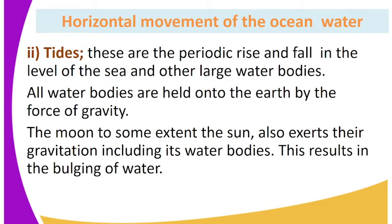On to the horizontal movement of ocean water. Number two are tides. These are the periodic rise and fall in the level of the sea and other large water bodies.